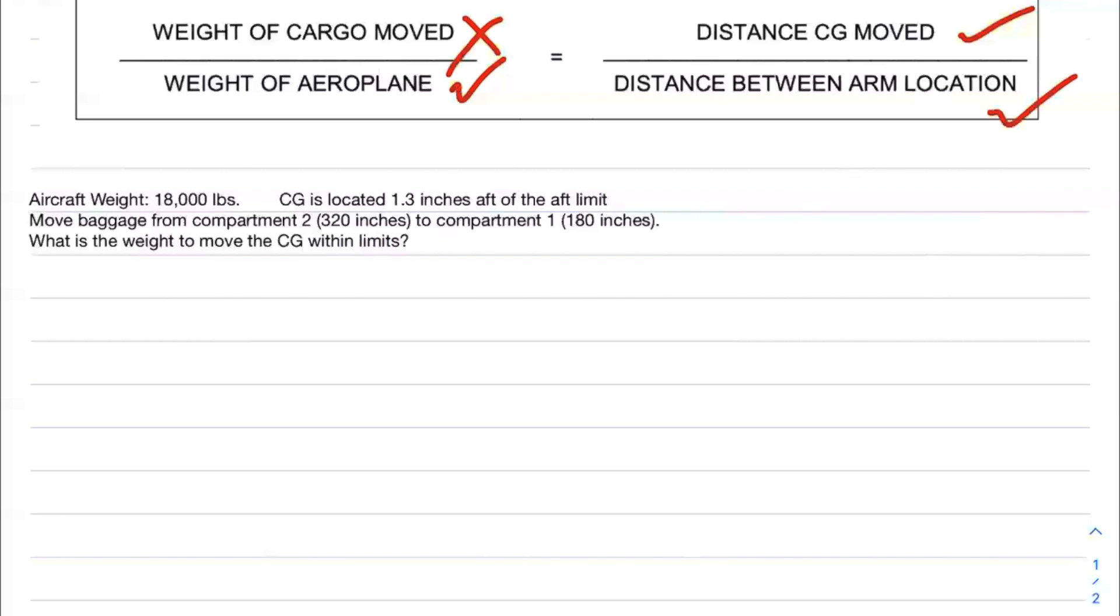The weight of the aircraft in this case is 18,000 pounds. The CG at the moment is 1.3 inches aft of the aft limit. In the aircraft, imagine you have the forward limit and the aft limit. This CG right now is 1.3 inches aft of the aft limit.